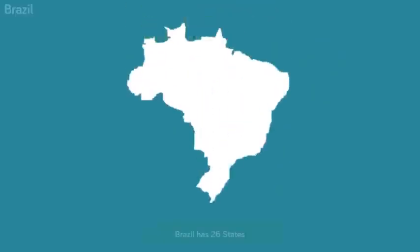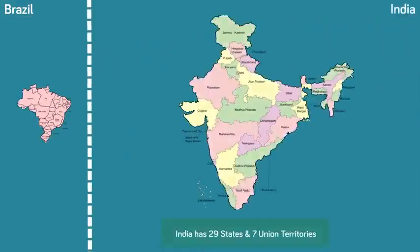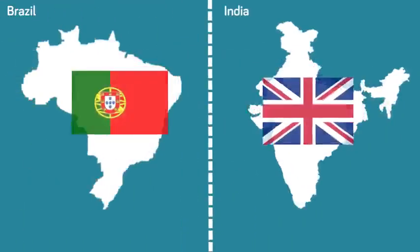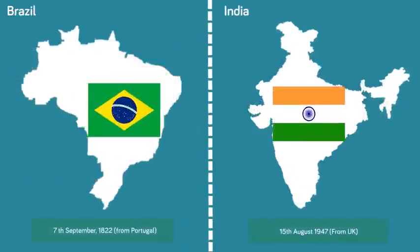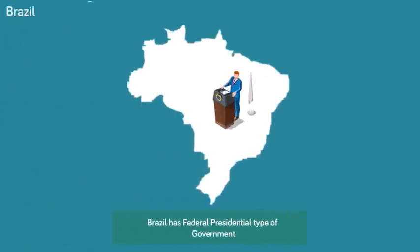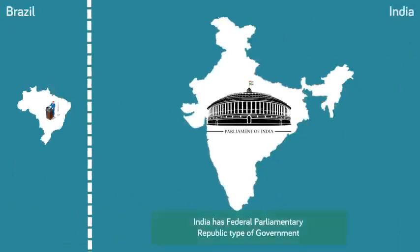Brazil has 26 states, while India has 29 states and seven union territories. Brazil celebrates independence on 7 September 1822 from the Portuguese; India celebrates independence on 15th August 1947 from the British. Brazil has a federal presidential republic type of government, whereas India has a federal parliamentary republic type of government.